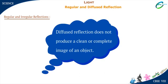Some extremely rough surfaces like wood, paper, etc. do not produce any image at all due to highly diffused reflection.